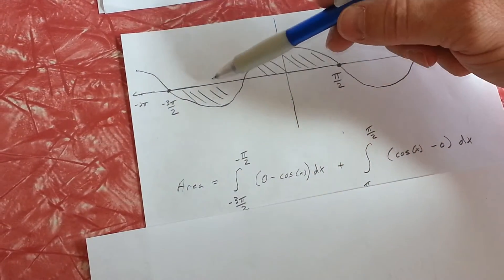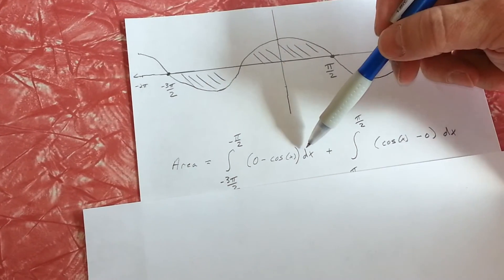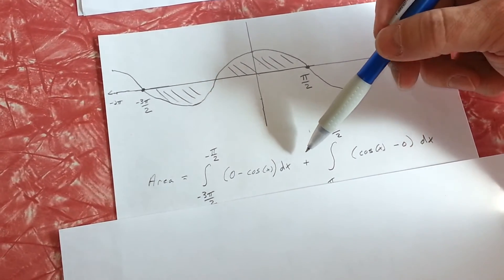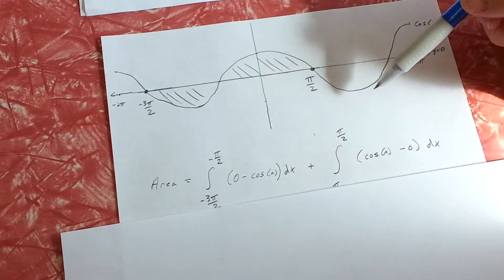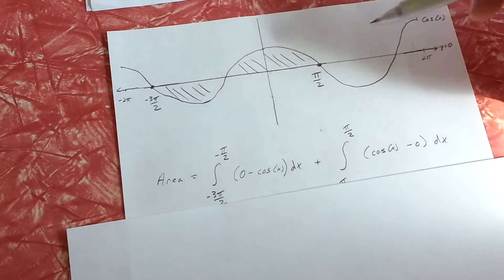So we'll take y equals zero minus the cosine of x dx, and then we'll add the cosine of x minus y equals zero.